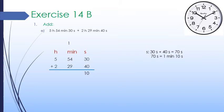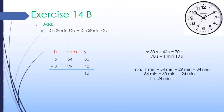In the minute column, we add 1 minute carried, 54 minutes, and 29 minutes, which equals 84 minutes. Again, 60 minutes equals 1 hour, so 84 minutes equals 60 minutes plus 24 minutes, which is 1 hour and 24 minutes. We write 24 minutes under the minute column and carry 1 hour to the hour column.